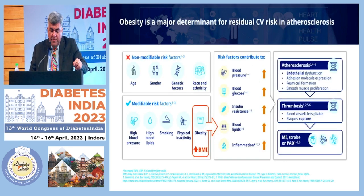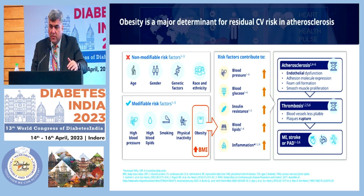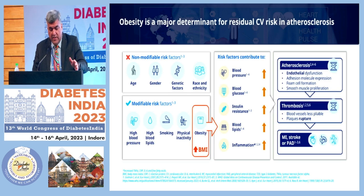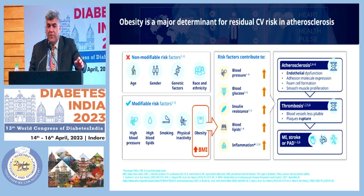Obesity is a major determinant for cardiovascular disease. There are non-modifiable risk factors — gender, genetics — but among modifiable risk factors, there are solutions to reduce the risk. Every modifiable risk factor should be controlled to prevent disease. These risk factors contribute to increased blood pressure, increased glucose, bad lipids, and an adverse inflammatory milieu.